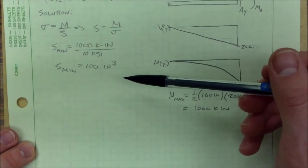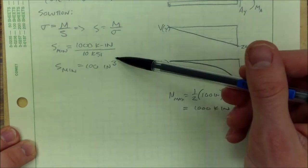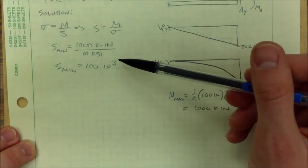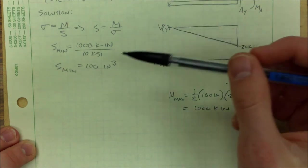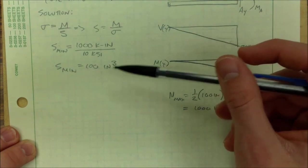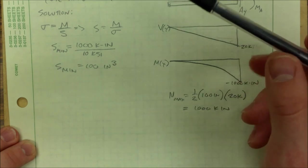And testing every single one. Finding a minimum section modulus means that we can skip all the beams that have less than 100 inches cubed for their section modulus. So this is a shortcut. We can cut out a whole bunch of those test trials.